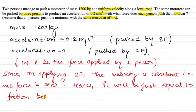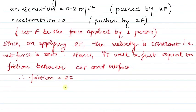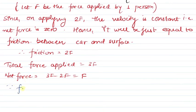The 2f applied is just equal to friction between the car and surface. Therefore, friction equals 2f. Now if friction is 2f and we are applying a total of 3f, then the net force — since friction acts in the opposite direction of motion — becomes 3f minus 2f.